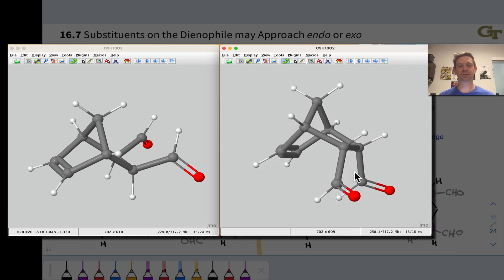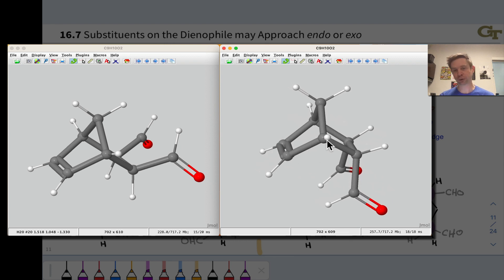In the endo isomer, of course, the opposite is true. Now the aldehyde groups are down below those two newly formed sigma bonds, which are here and here, and the carbon-carbon double bond group is also below the newly formed sigma bonds.